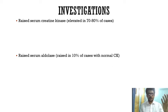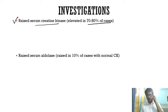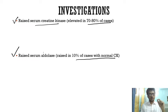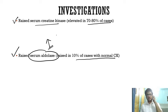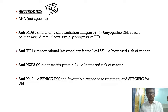Coming to investigations: like any other inflammatory myopathy, there is a non-specific rise in serum creatine kinase in 70 to 80 percent of cases. In 10 percent of cases where creatine kinase is normal, you can look for the other muscle enzyme — serum aldolase — which will be raised in those cases.